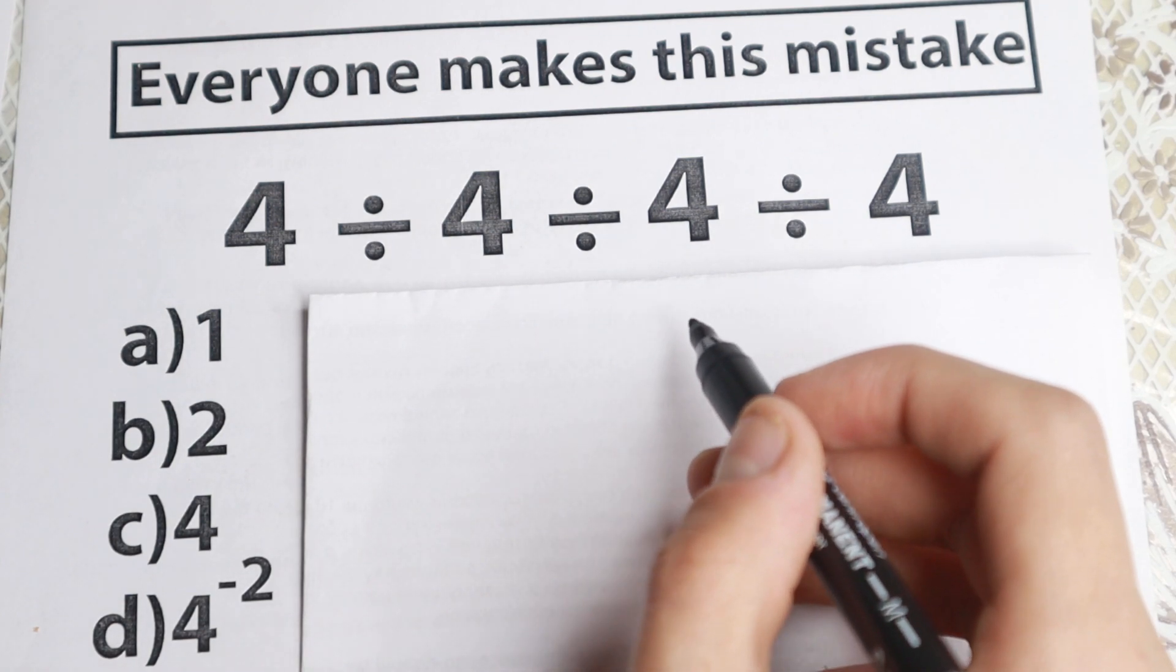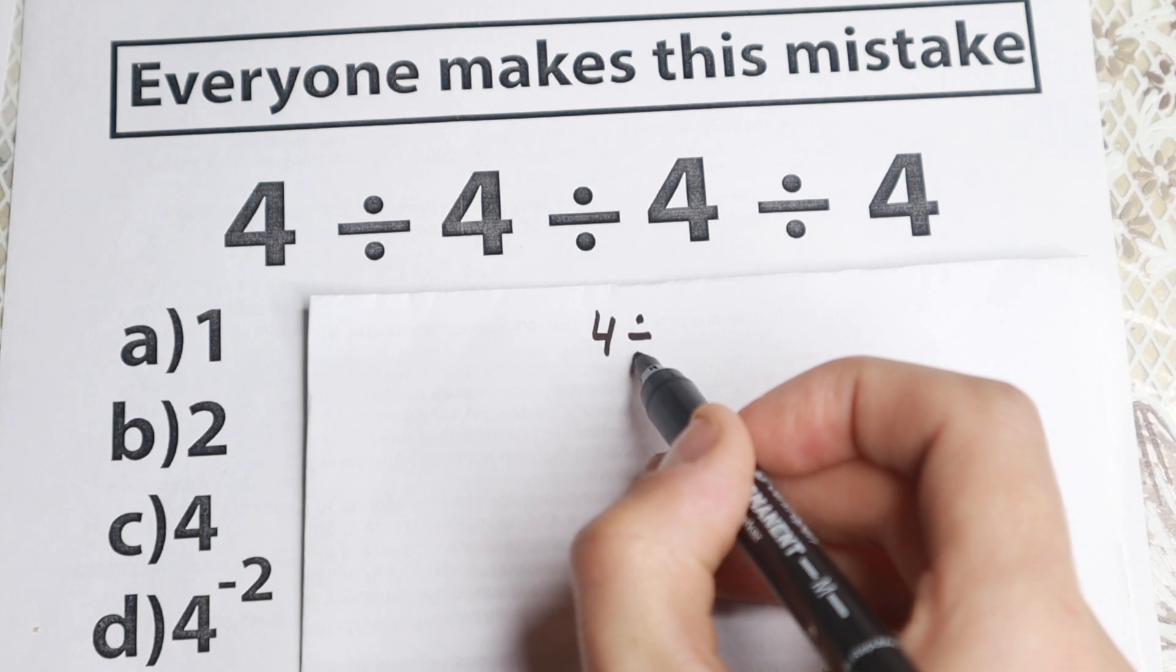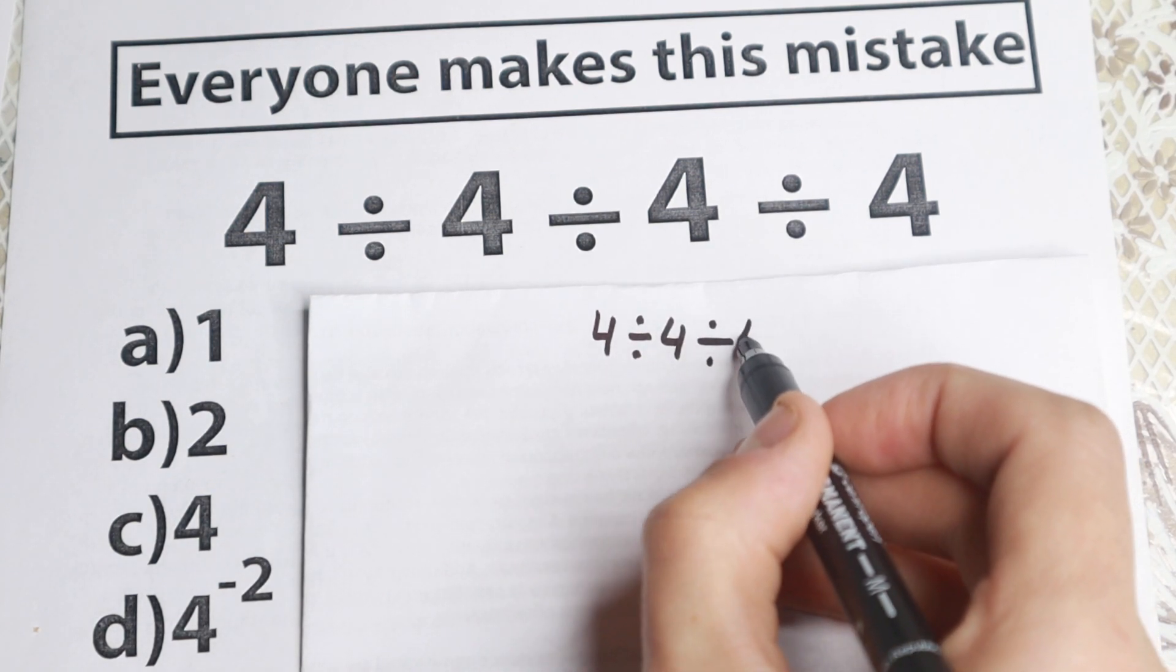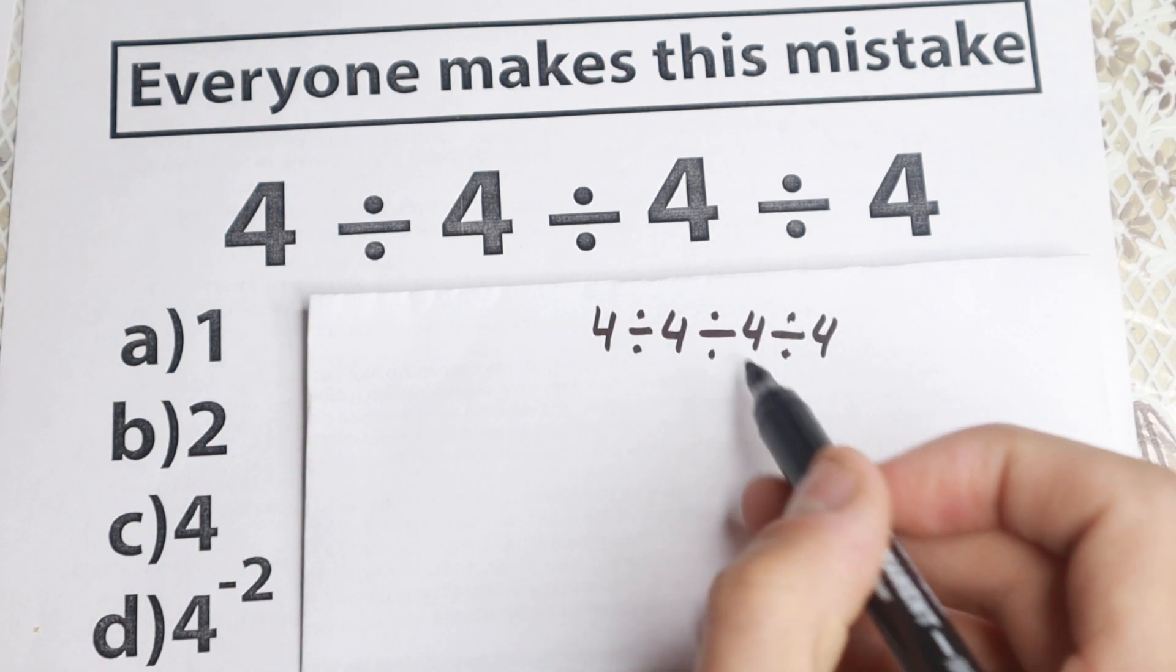So what is the first approach to solve this problem? First of all we can easily rewrite this problem right here. So 4 divided by 4 divided by 4 and divided by 4. So we have this question from the beginning.